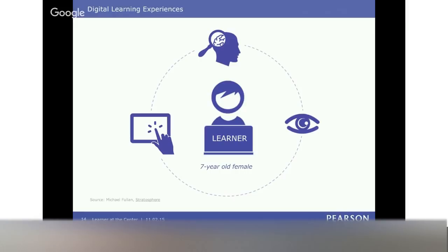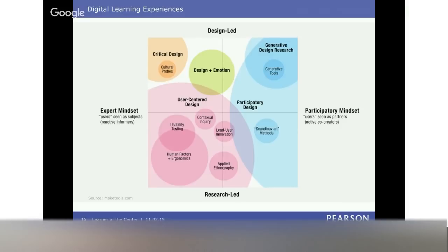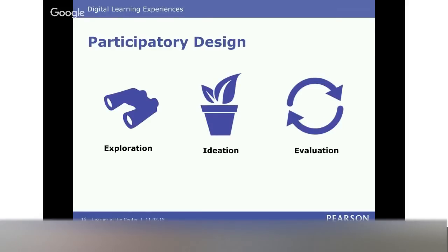How do we get at the irresistible engagement component? For years at Pearson, we've been conducting research with kids, mainly in the form of usability testing. I really like this graphic from Dr. Liz Sanders out of Ohio State University, which puts it on a continuum — from seeing yourself as an expert and engaging with kids as research subjects to test what you've already built, versus the participatory mindset, where we're seeing users more as our design partners.